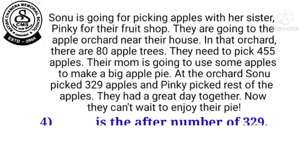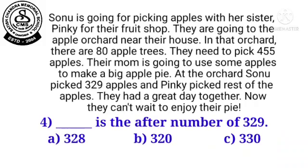Now, next number 4: What is the after number of 329? The after number of 329 is 330. So, 330 — that is option number C — is the right one.